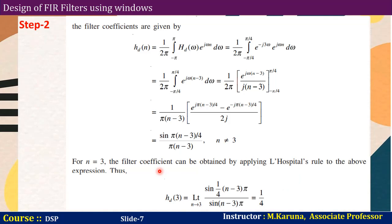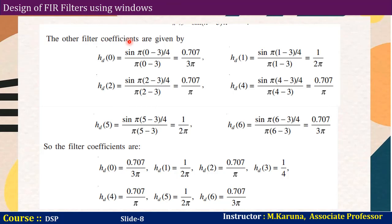Let us see the remaining coefficients. HD of 0: substitute n equal to 0 and you will get the corresponding value. Next HD of 1: substitute n equal to 1 and you will get that value. Similarly HD of 2, HD of 3 — already calculated using L'Hôpital's rule — HD of 4, and HD of 6. So for n equal to 7, the indices go from 0 to 6, giving 7 finite samples. These are the obtained filter coefficients: HD of 0, HD of 1, HD of 2, HD of 3, HD of 4, HD of 5, HD of 6.